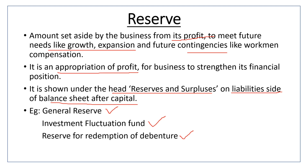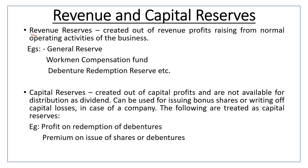Now let's look at capital reserve and revenue reserve. Revenue reserve is created out of revenue profits arising from normal operating activities of the business. Examples of revenue reserve include general reserve, workman compensation fund, and debenture redemption reserve.